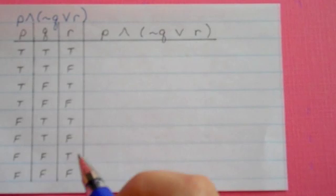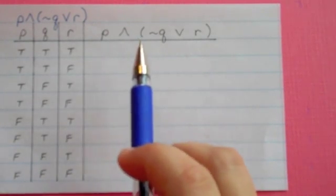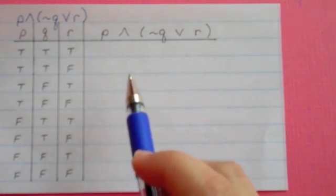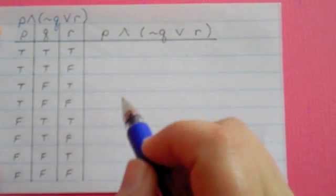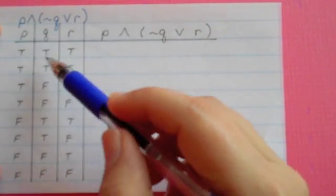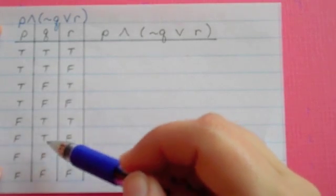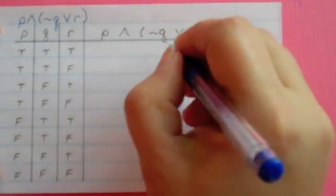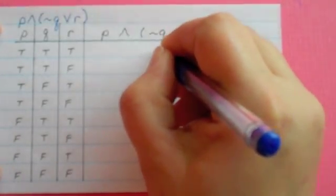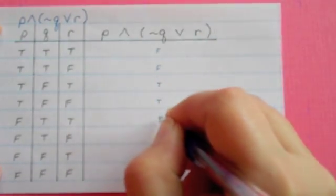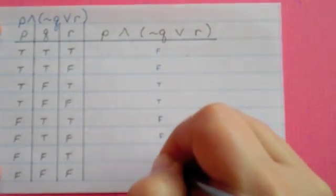I'm going to start with this problem. Again, just like before, I'm going to start inside my parentheses. The first thing I'm going to do is look at NOT Q. Remember that Q is two trues, two falses, two trues, two falses. So NOT Q is going to be exactly the opposite: false, false, true, true, false, false, true, true. I wrote those a little small because it's just my first step.